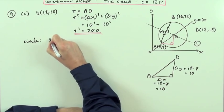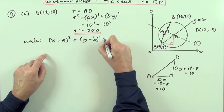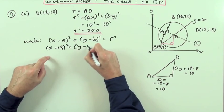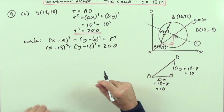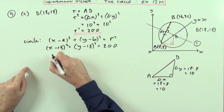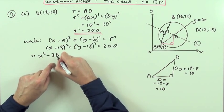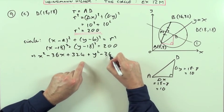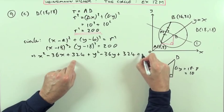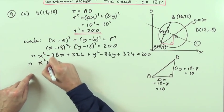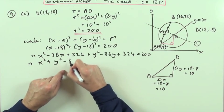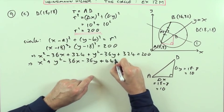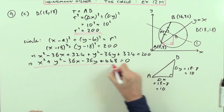What's the equation of the circle? It'll be (x - a)² + (y - b)² = r². So it's going to be (x - 18)² + (y - 18)² = 200. I'm going to use it in other parts, so I'll multiply that out. It's going to be x² - 36x + 324 + y² - 36y + 324 = 200. So I've got x² + y² - 36x - 36y + 648 - 200, which is + 448 = 0.